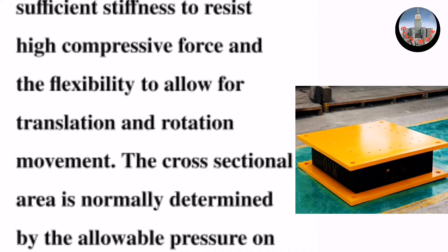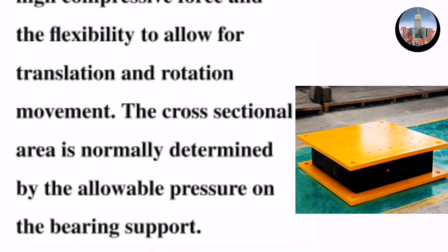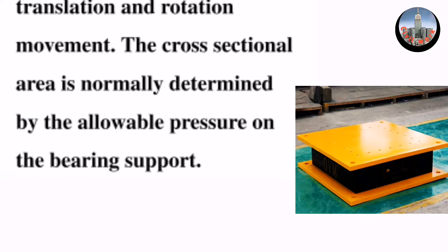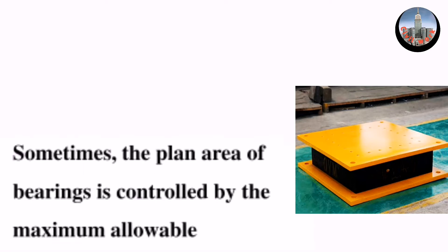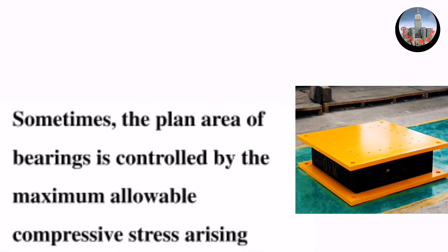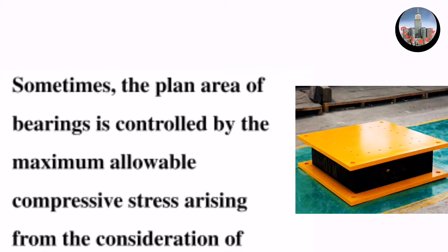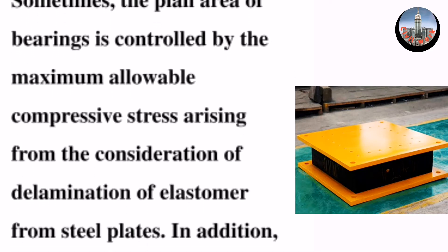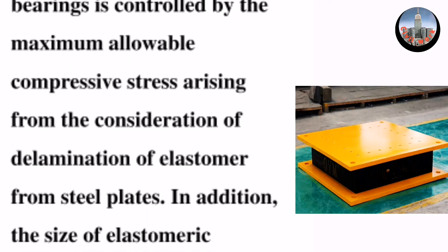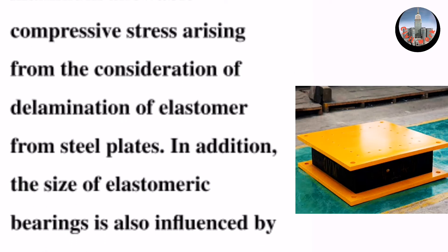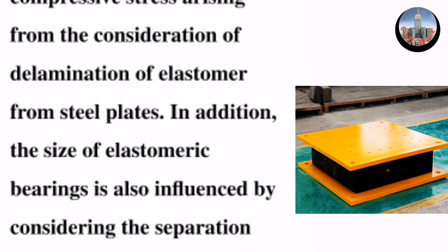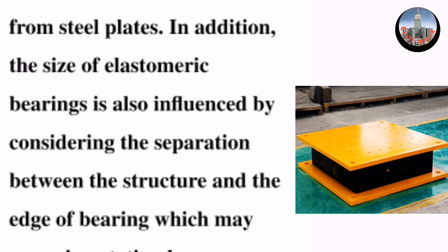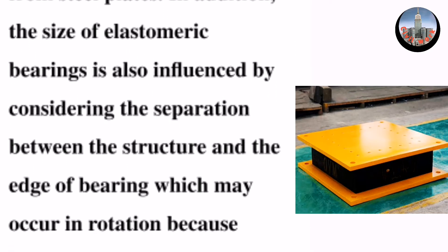The cross-sectional area is normally determined by the allowable pressure on the bearing support. Sometimes the plan area of bearings is controlled by the maximum allowable compressive stress arising from the consideration of delamination of elastomer from steel plates. In addition, the size of elastomeric bearings is also influenced by considering the separation between the structure and the edge of bearing.